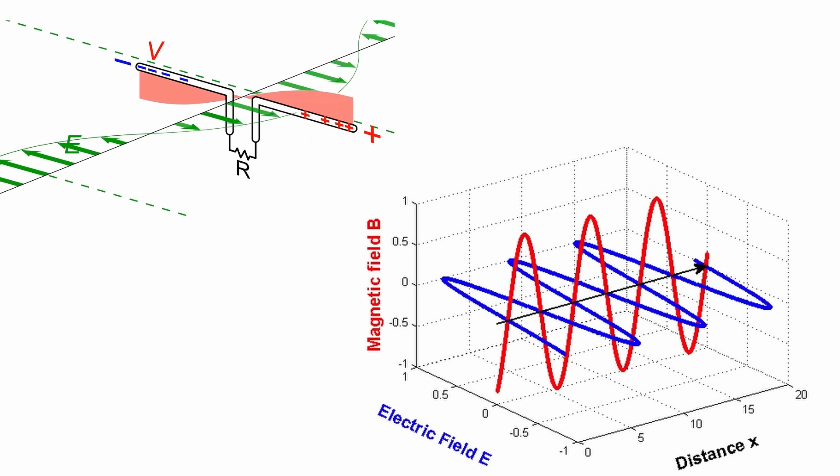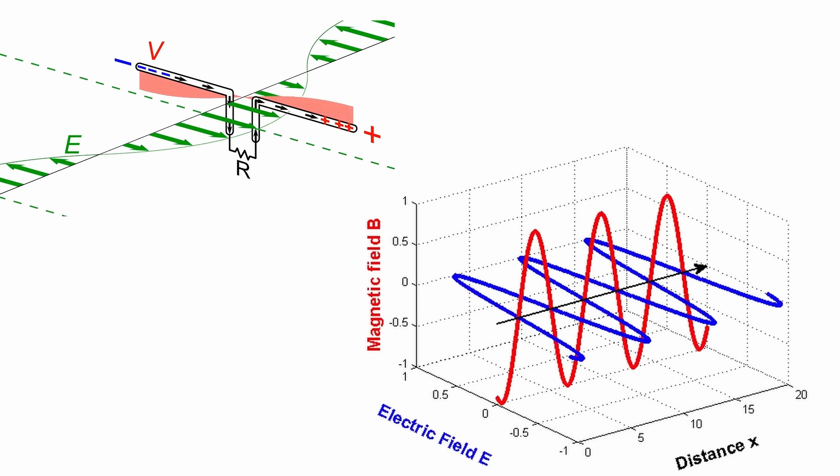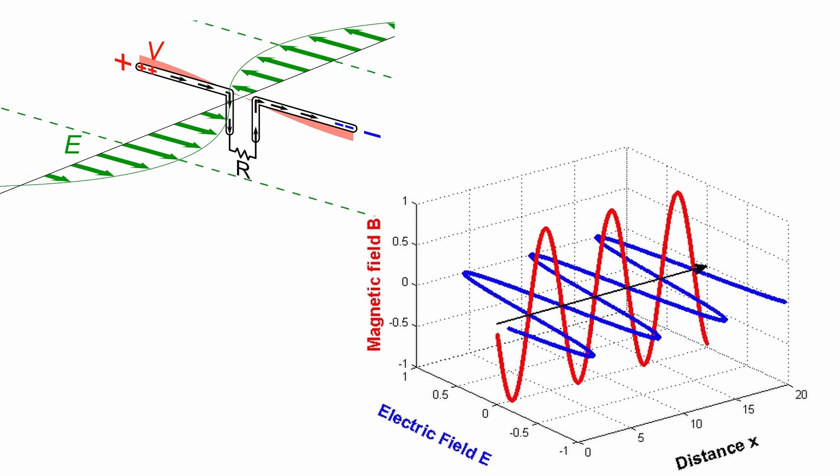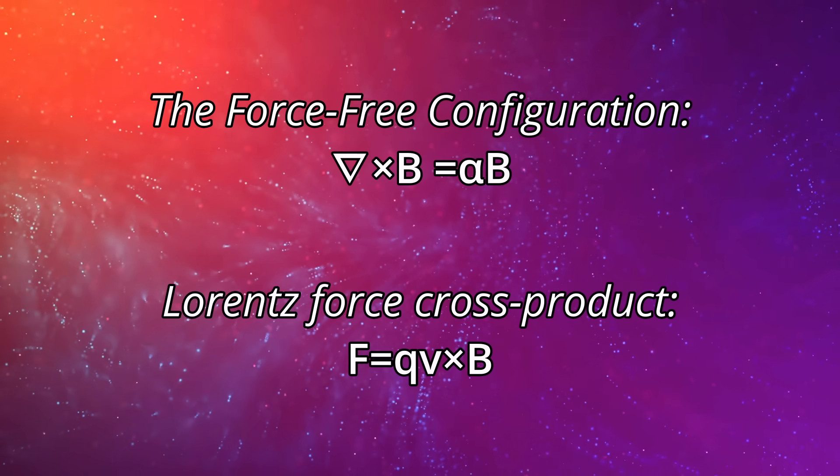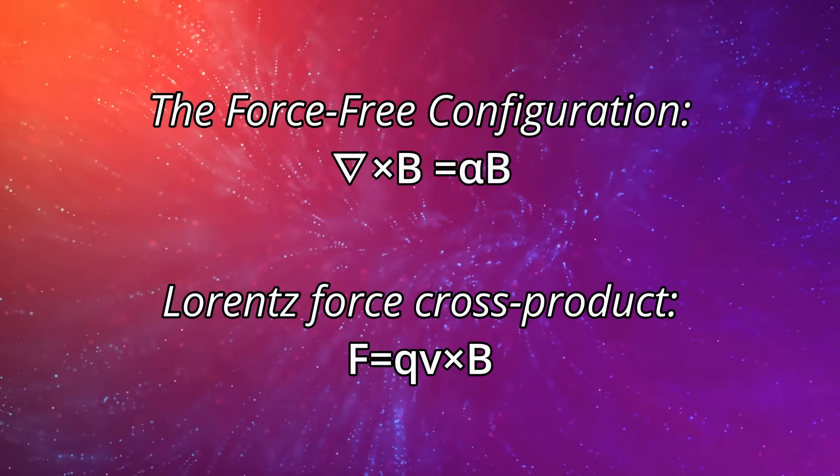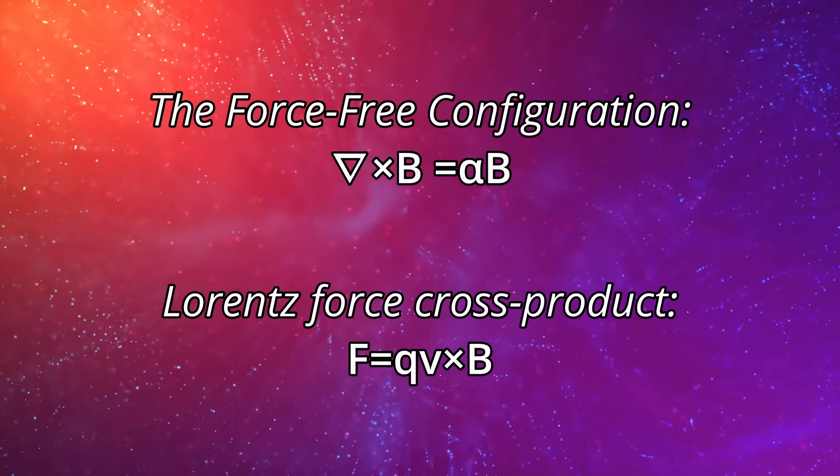In electromagnetism, electric and magnetic fields are orthogonal, locked at right angles to each other and to the direction of wave propagation. Plasma physics, too, is full of cross-field motions that emerge from similar geometry.